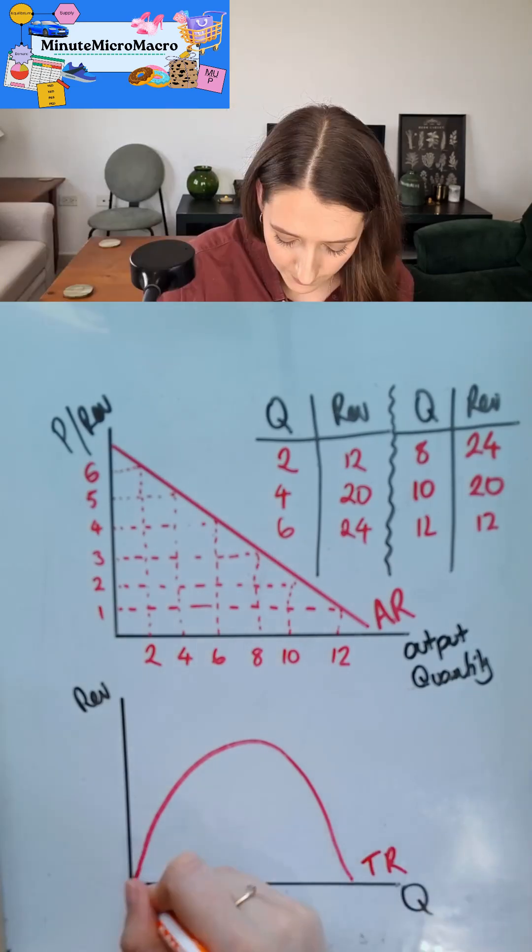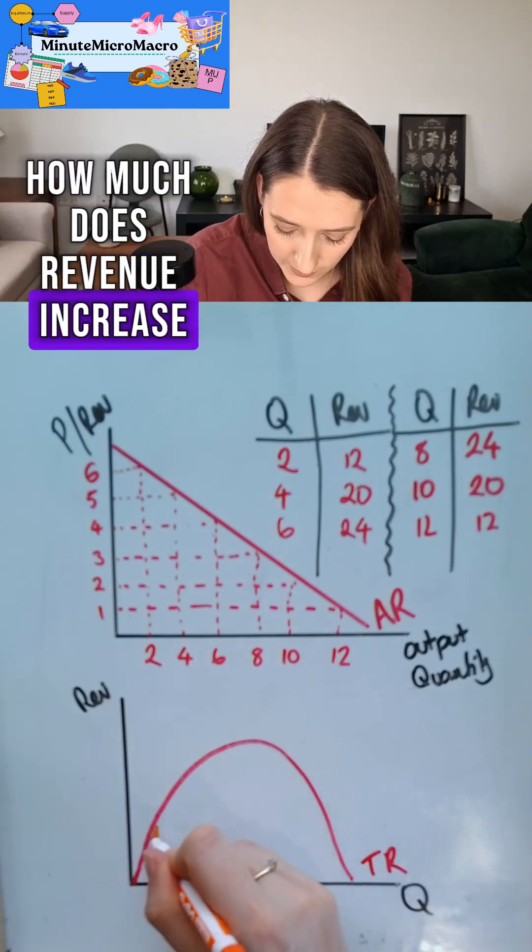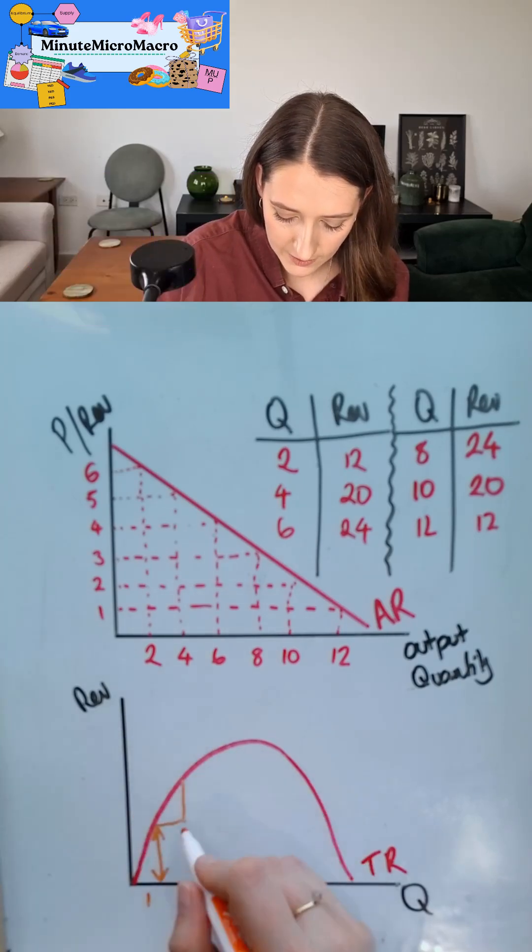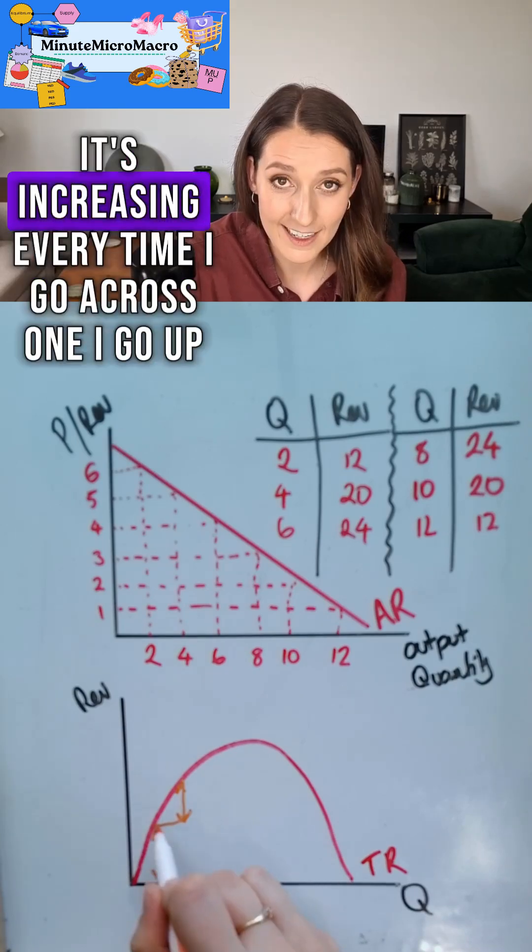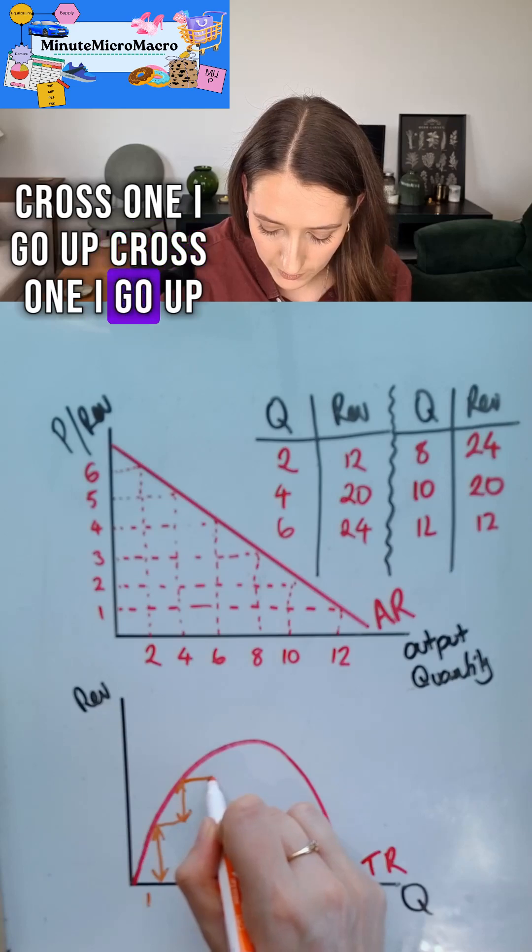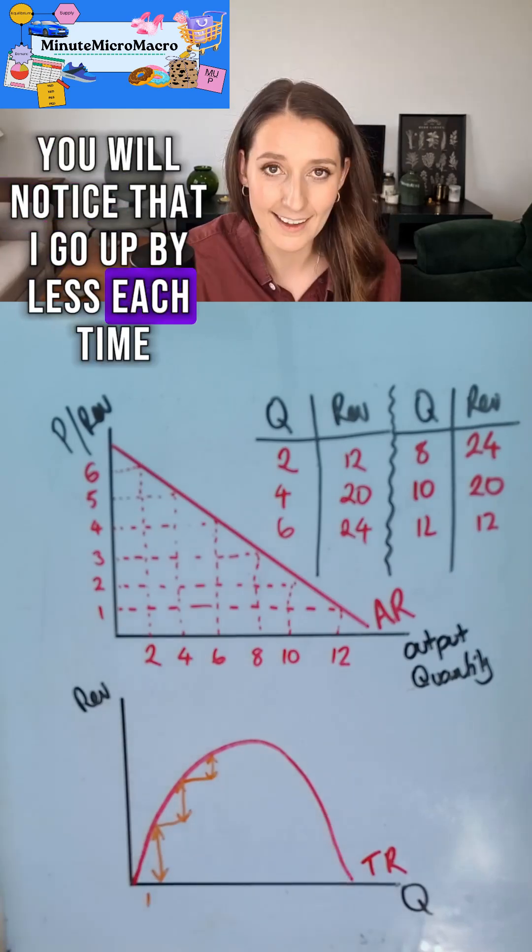We can work out marginal revenue by saying how much does revenue increase every one unit I go across, and you can see initially my marginal revenue is positive. It's increasing. Every time I go across one I go up, across one I go up, across one I go up. You will notice I go up by less each time.